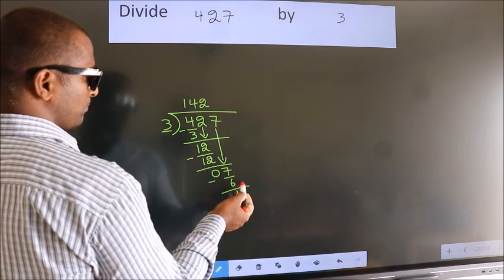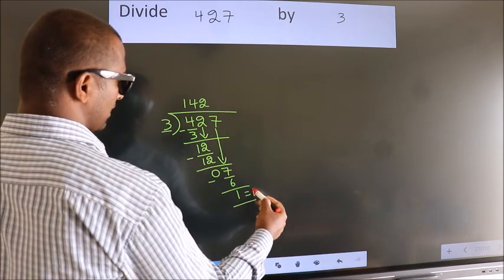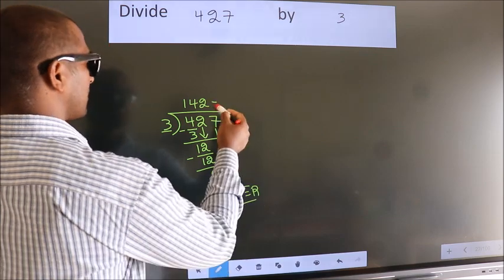No more numbers to bring it down. So we stop here. This is our remainder. This is our quotient.